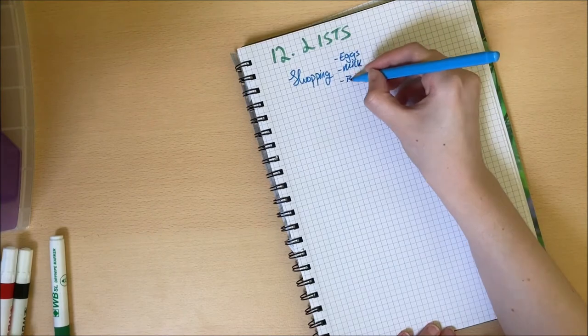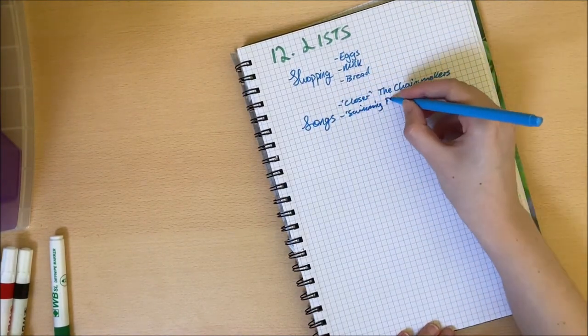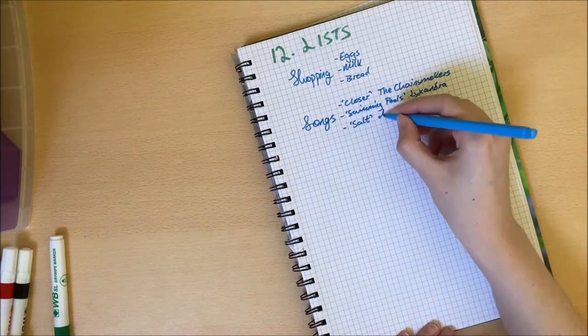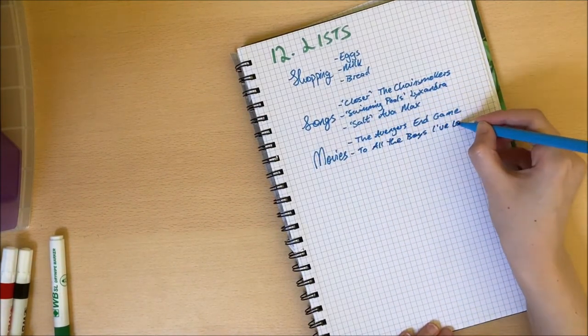Number 12 is to make lists. This could be shopping lists, books you want to read, books you have read, songs or movies or TV shows that you want to track. You can write down all your suggestions and have them in one handy place.